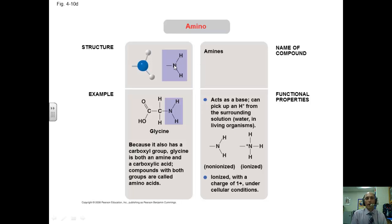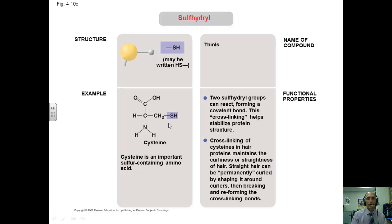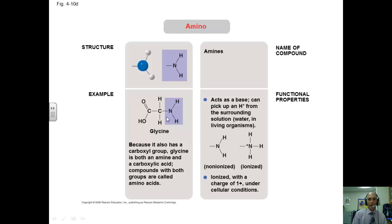Aminos are a nitrogen with two or three hydrogens bound to it. This is the amine group, and amino acids have a carboxyl on one side here, and they have an amine on the other side, which is how they get their name: amino acid. So they can be non-ionized or they can be ionized.